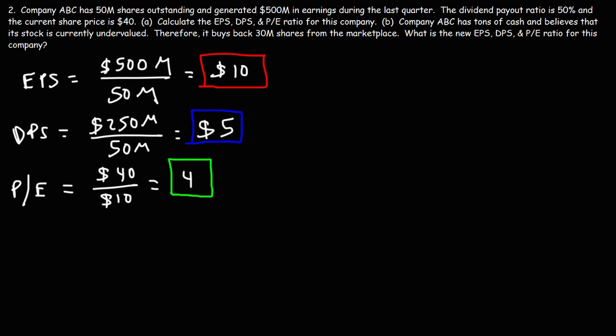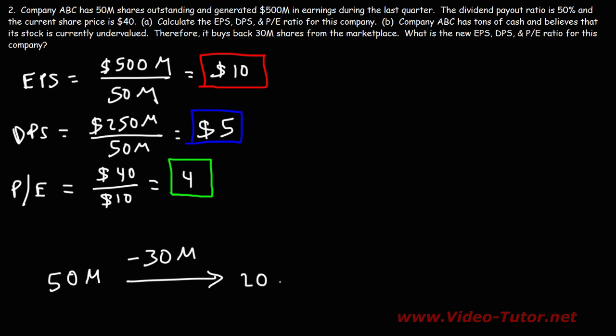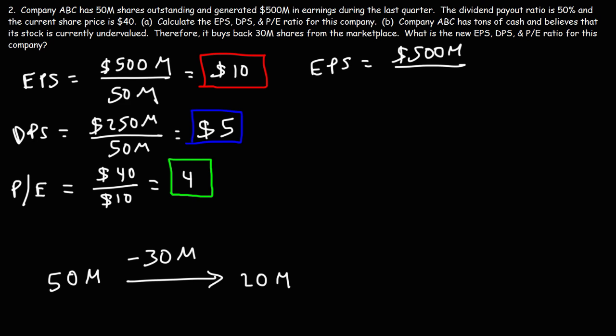Now let's look at Part B. Company ABC has tons of cash and believes its stock is currently undervalued, so it buys back 30 million shares from the marketplace. Initially the company had 50 million shares outstanding; after buying back 30 million shares, there are now 20 million shares in the marketplace. The new EPS is $500 million — earnings are still the same — divided by 20 million shares outstanding. 500 divided by 20 is $25, so that's the new earnings per share.